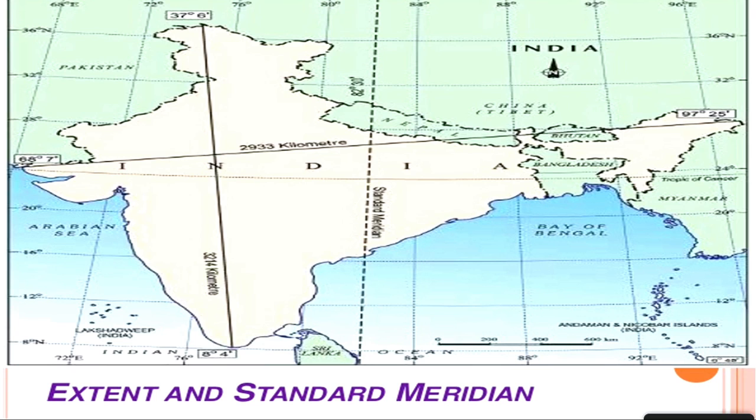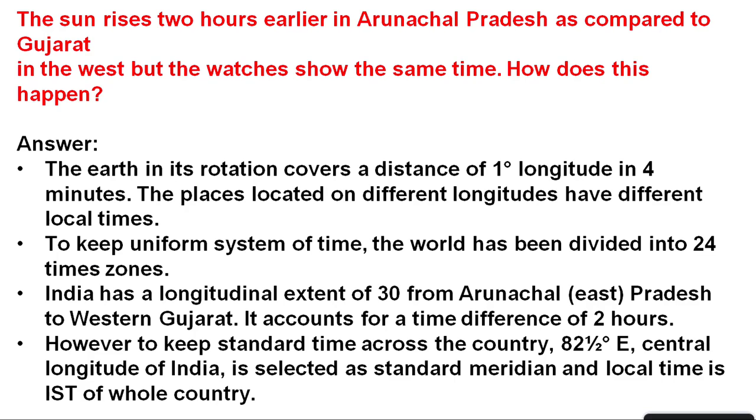The extent of India from north to south is 3,214 kilometers — from Kashmir to Kanyakumari. From Gujarat to Arunachal Pradesh it is approximately 2,933 kilometers. There is approximately a 30-degree difference, yet the north-to-south distance is greater because India tapers towards the south in the global perspective — because of this the length increases from Kashmir to Kanyakumari. This leads to another question: between Gujarat and Arunachal Pradesh, there is a time difference of two hours. Why does this happen?